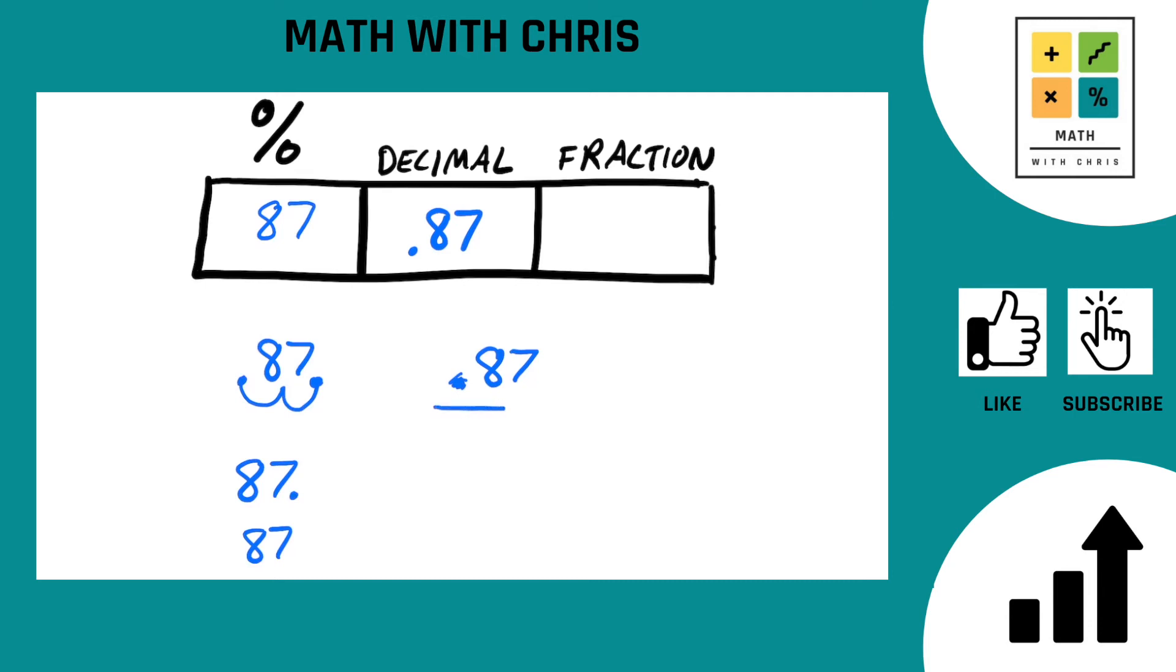We don't need it. We're going to put it over a factor of 10 with the number of zeros matching the digits in the number. 87 has two digits - an eight and a seven. So we need to put it over 100 because 100 has two zeros.